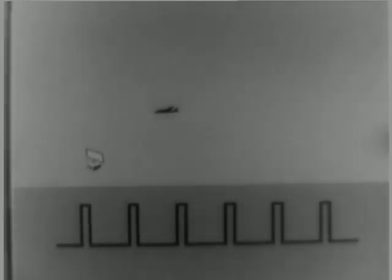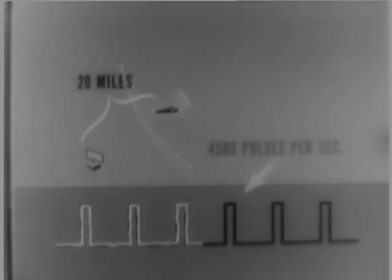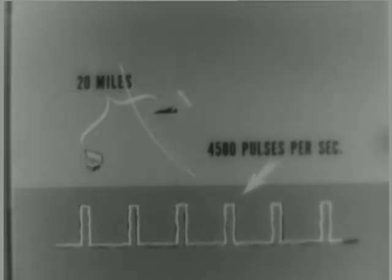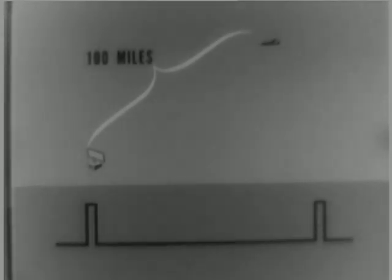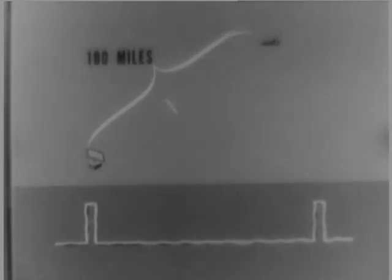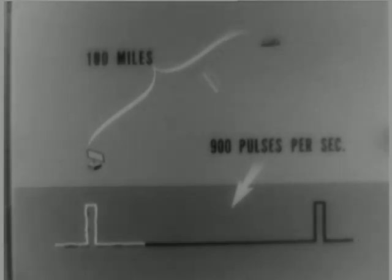For a set designed to operate at a maximum range of 20 miles, the timer might generate as many as 4500 pulses per second. But if the desired maximum range is 100 miles, the listening period has to be longer, and the timer might have time to generate no more than 900 pulses per second.